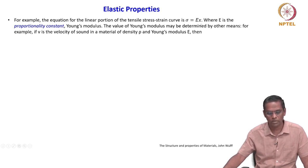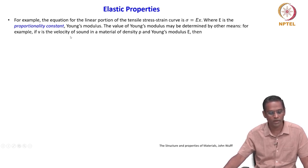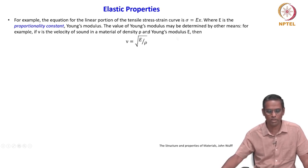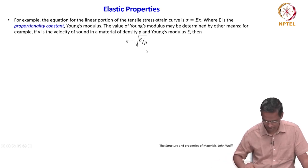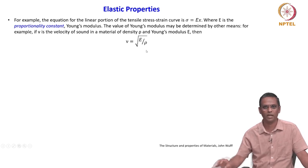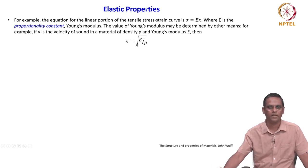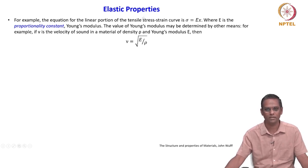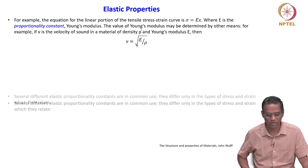The value of Young's modulus may be determined by other means. For example, if nu is the velocity of sound in a material of density rho and Young's modulus E, then there is a relation nu is equal to square root of E by rho. This is one way of finding Young's modulus. The other way is the usual tensile deformation within the elastic region — the slope is equal to Young's modulus.